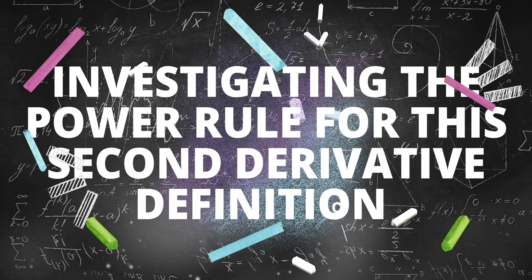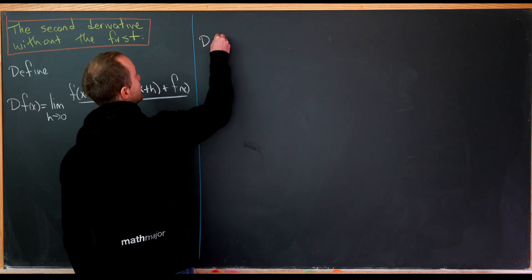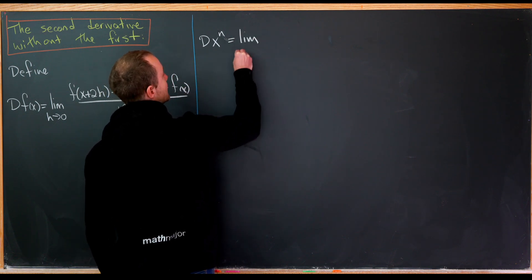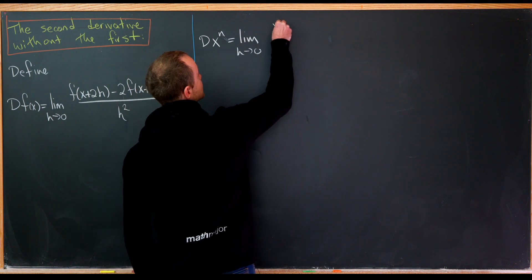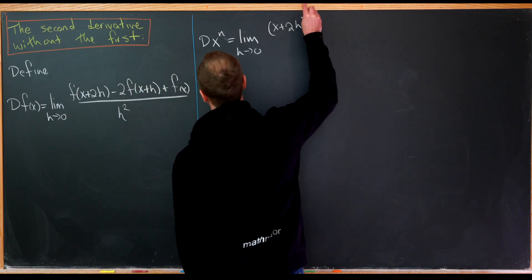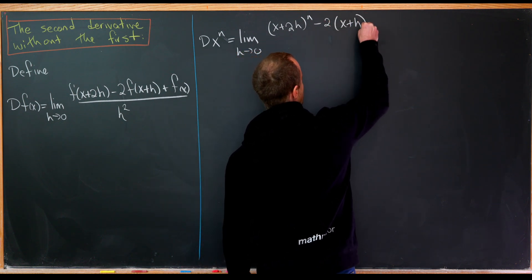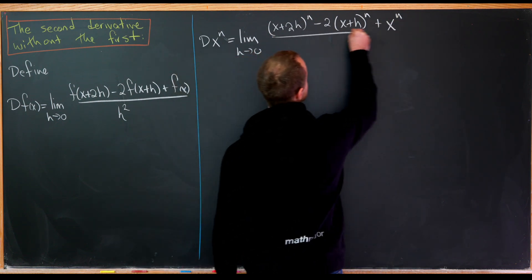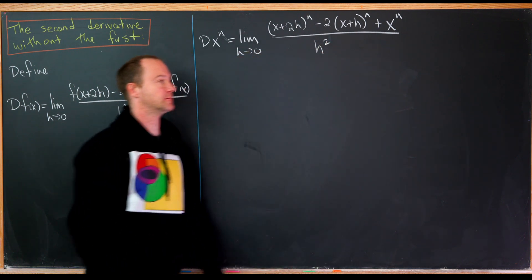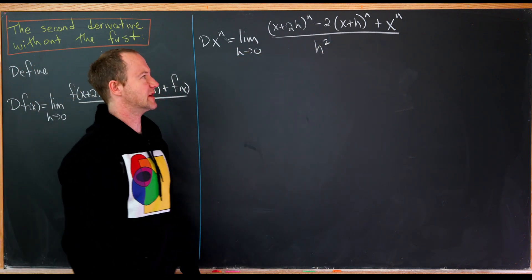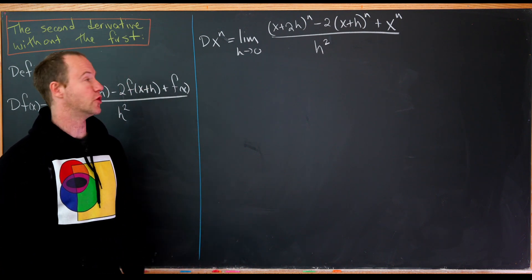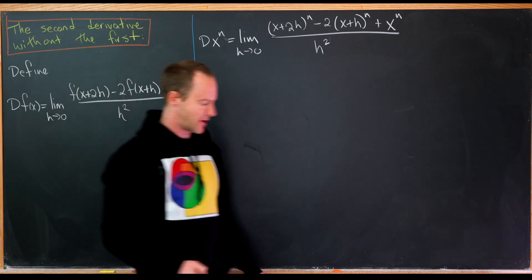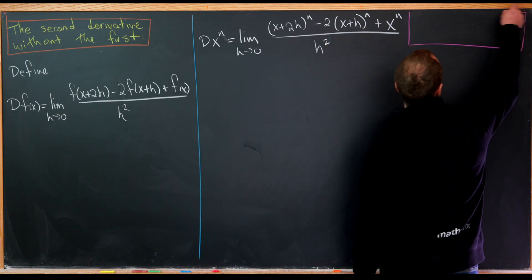Let's look at the power rule first — something of the form x to the n. Applying this operator on x^n, we get the limit as h goes to 0 of (x + 2h)^n minus 2(x + h)^n plus x^n, all over h squared. To evaluate this, we'll use the binomial expansion formula for (x + a)^n.